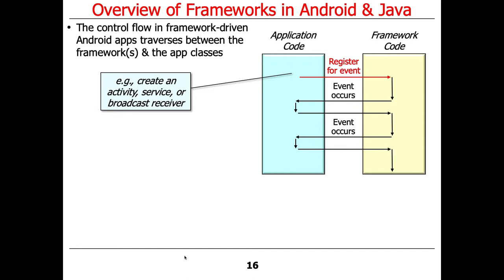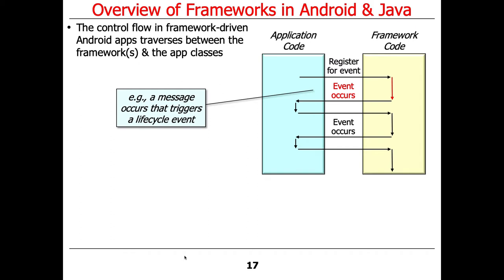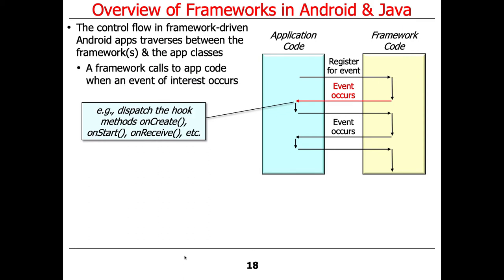You have framework code, which would be Android, and application code, which you implement by extending or customizing abstract classes, superclasses, or interfaces. When you plug your code into the framework — for example, when you create an activity — it registers for one or more events. At that point, flow of control turns over to the framework, which owns the event loop and waits for something to happen, while the application code is dormant.